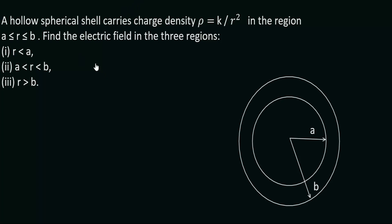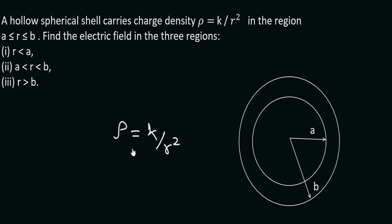In this video, we will solve a question for Gauss's law in the case of spherical symmetry. It's given that we have two spherical surfaces: a sphere of radius A which is completely enclosed within a bigger sphere of radius B. All the charge is distributed in the volume in between these spheres, given volume charge density rho as some constant k divided by r squared.